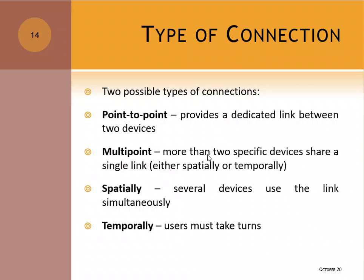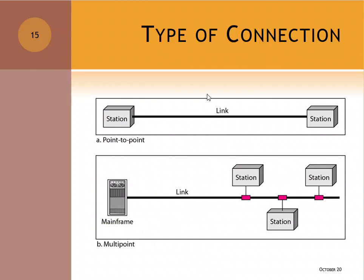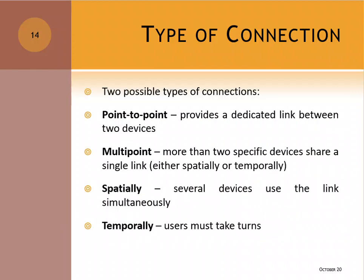Multi-point is when more than two specific devices share a single link. Point-to-point means only two devices share a link; multi-point means more than two devices — three, four, five, and so on — share a single link. The sharing can be divided into two types: spatially or temporarily.